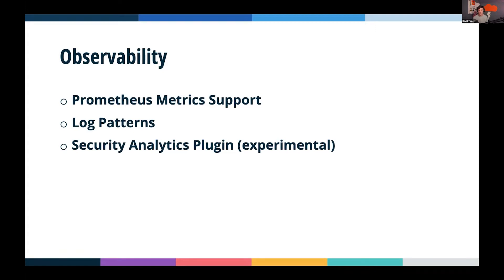We also have our security analytics plugin, which is experimental. Out of the gate it supports around 2,000 different types of security rules in a standard format, and supports all different sorts of log types — Windows logs, net flows, and several other very common log patterns. Check out the security analytics plugin. Experimental means we're not making promises about the API being the same between versions — we can make breaking changes on minor version changes until we remove that experimental tag.